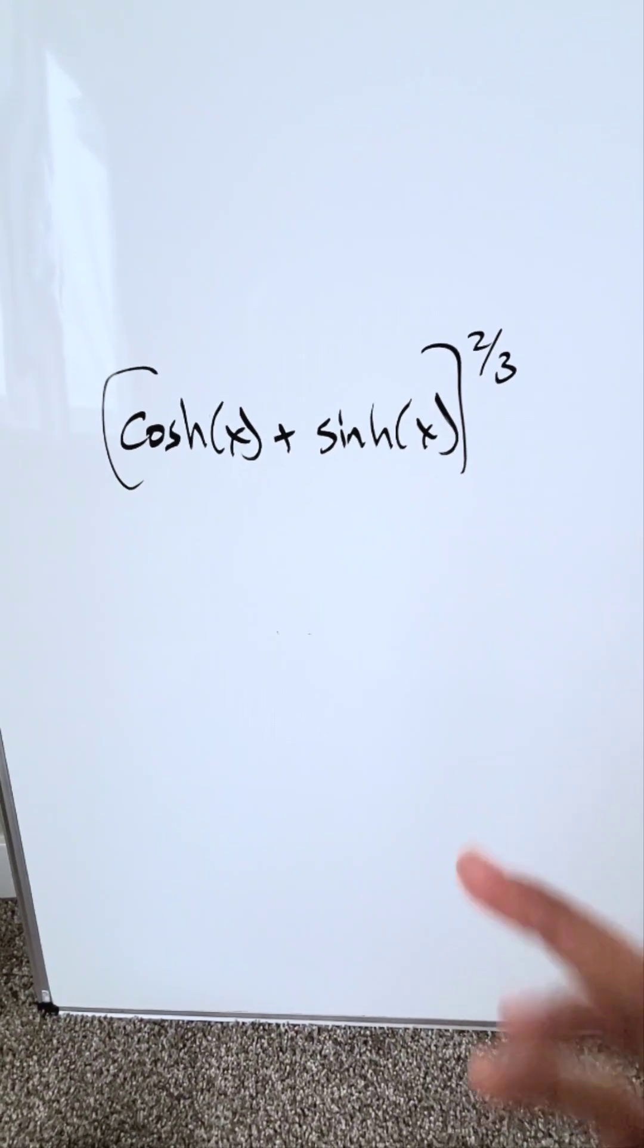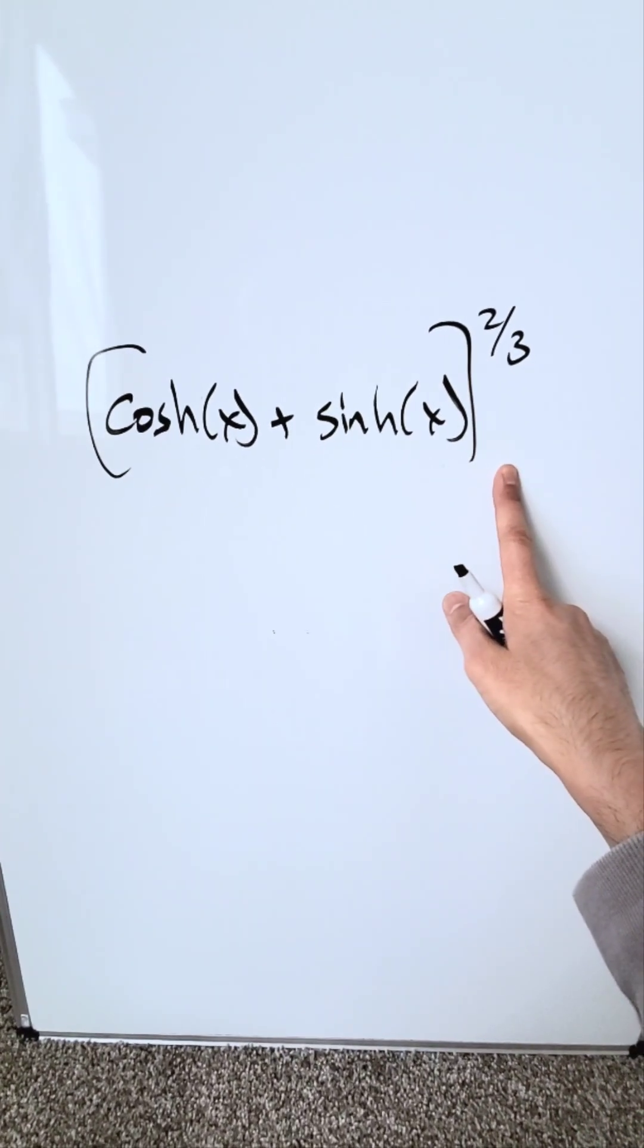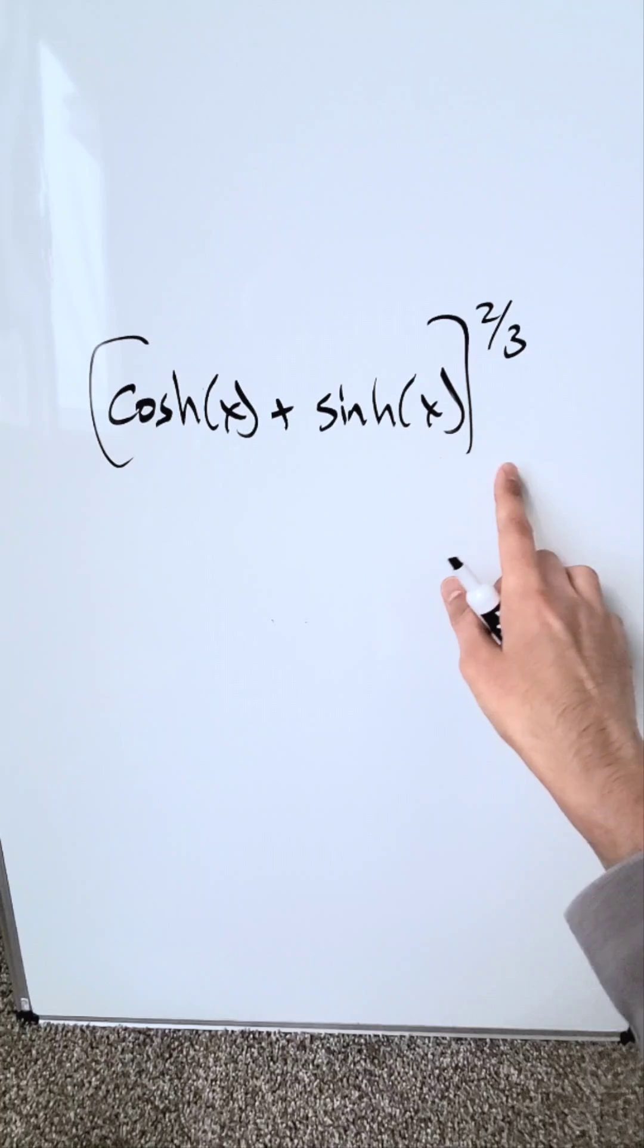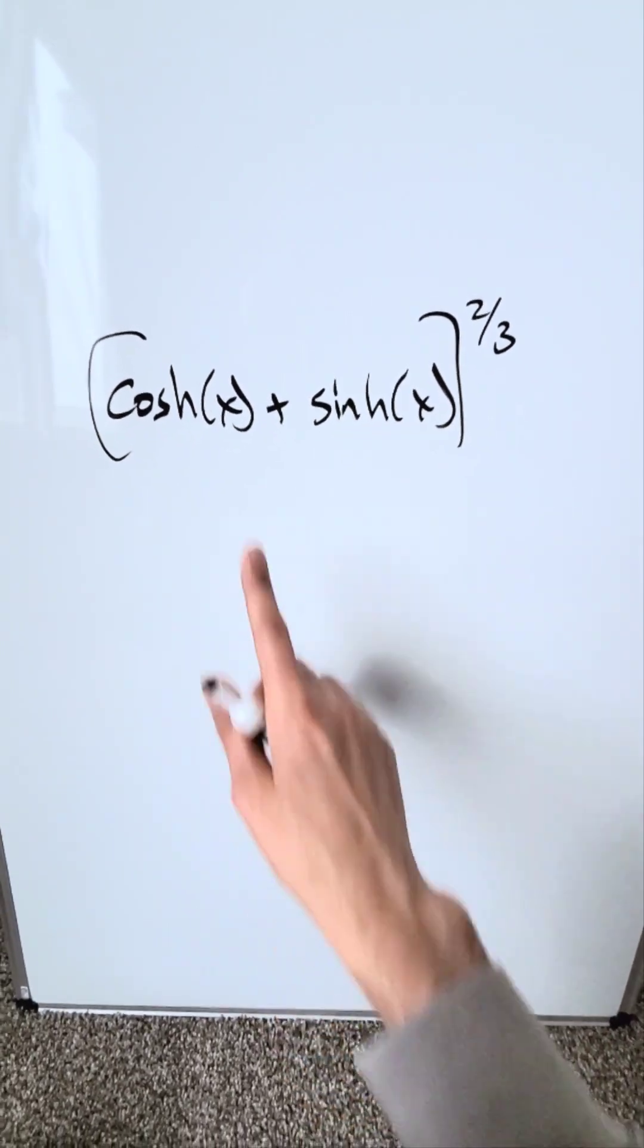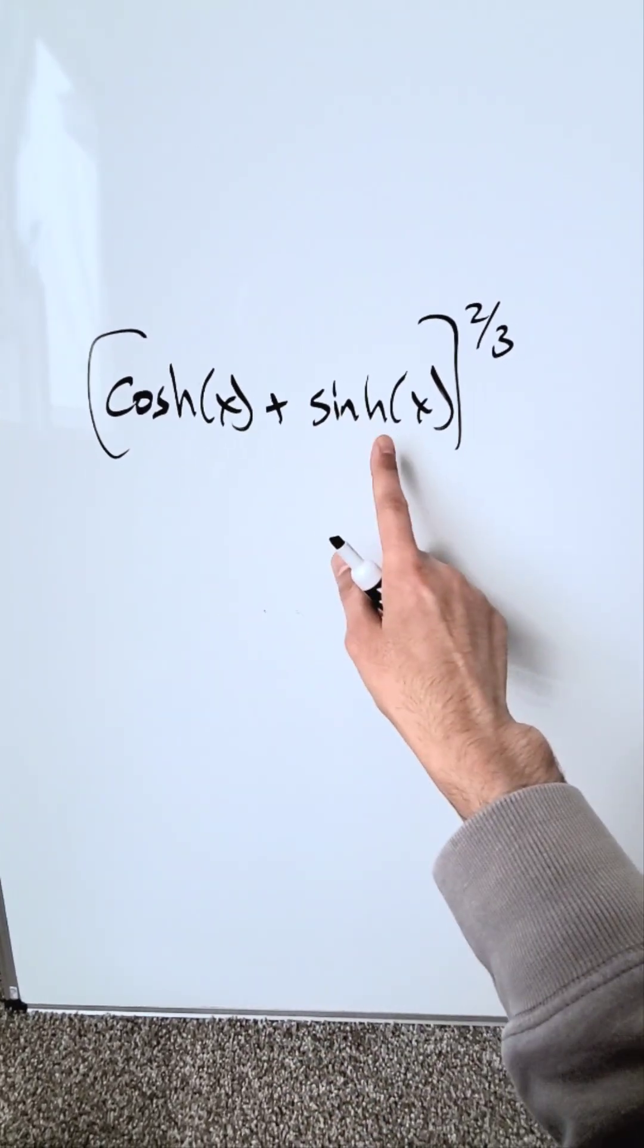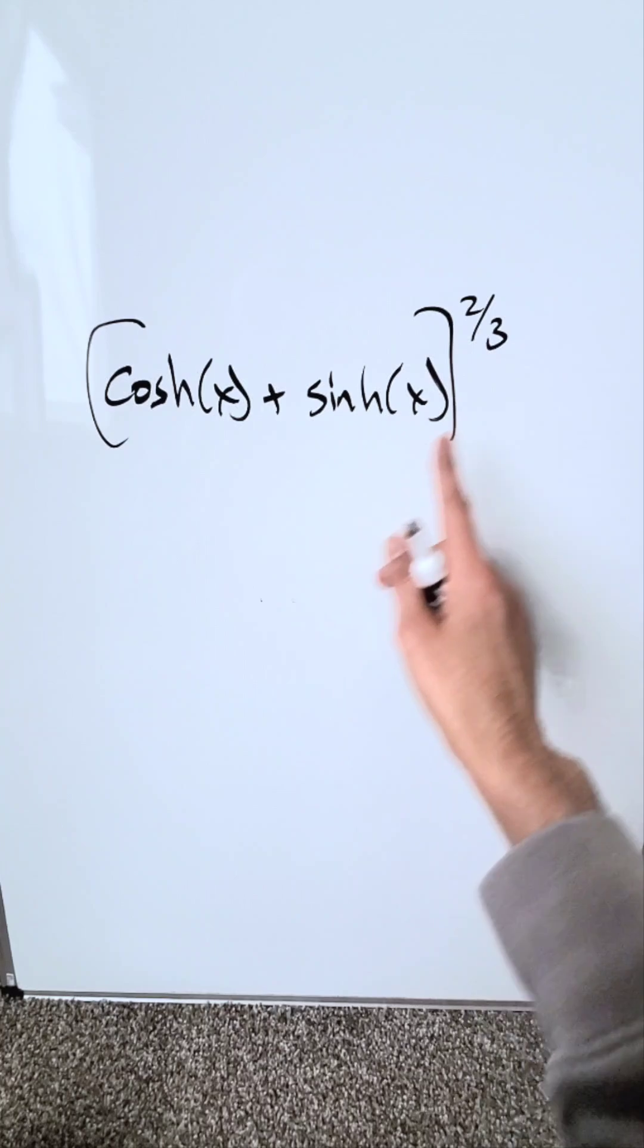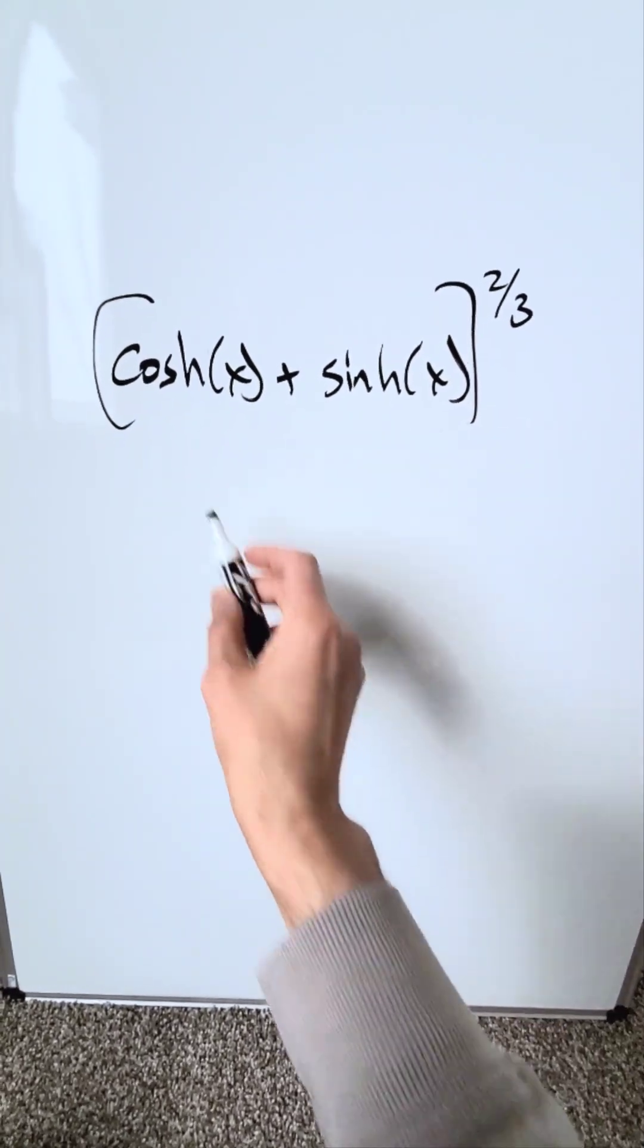You're looking at an interesting question. It's particularly designed to frustrate or intimidate a student because it looks more difficult than it is. Hyperbolic cosine x plus hyperbolic sine x in a form of a binomial to the power of 2 over 3. How can you evaluate it?